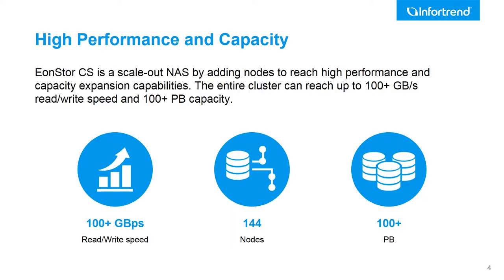CS supports up to 100GB per second throughput. It is also capable of scaling out up to 144 nodes with more than 100 petabytes of raw capacity to meet any critical application requirement.